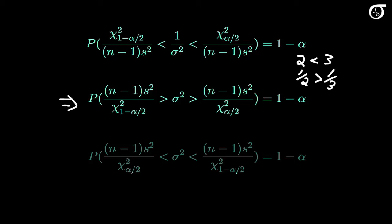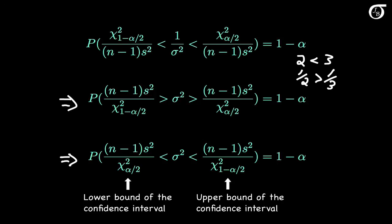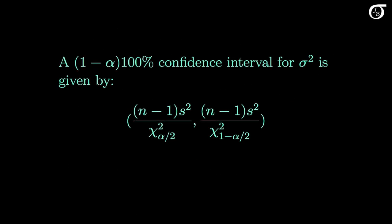We're now pretty much done, but it's better formed to put the smaller value on the left, so I'm simply going to rewrite this with the smaller value on the left. So when we are about to draw the sample, the probability is 1-alpha that sigma-squared gets captured between the quantities n-1 times s-squared over chi-squared sub alpha over 2, and n-1 times s-squared over chi-squared sub 1-alpha over 2. When we draw the sample, we can calculate the sample variance and these endpoints of the interval will take on values — the lower bound and upper bound of a 1-alpha confidence interval. So when all is said and done, when we are sampling from a normally distributed population, this interval is a 1-minus-alpha times 100% confidence interval for sigma-squared.